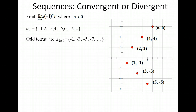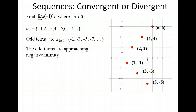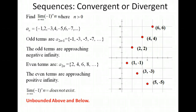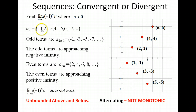The odd terms are represented by a with a subscript of 2n minus 1. This is just a way for us to call out specific terms of the sequence — putting 1 in gives the first term, 2 gives the third term, 3 gives the fifth term, and so on. The odd terms are approaching negative infinity while the even terms are approaching positive infinity, which tells us that the limit does not exist. If the limit does not exist, the sequence is divergent. This one is unbounded both above and below, and it is not monotonic because it's alternating from increasing to decreasing.